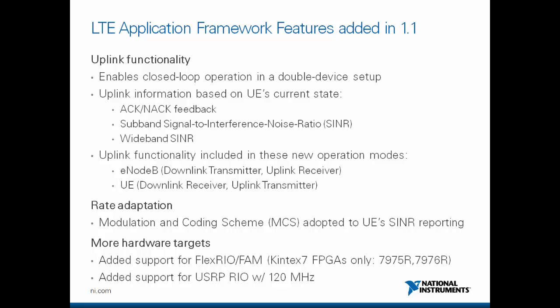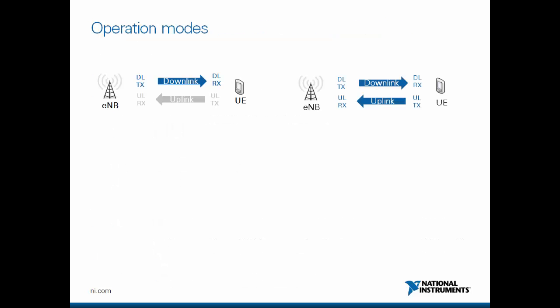More hardware targets are now supported. The FlexRIO with front-end adapter module is now supported, but only with the Kintex-7 FPGA — the 7975R and 7976R. Also, the USRP RIO with a 120 MHz bandwidth version is now supported.